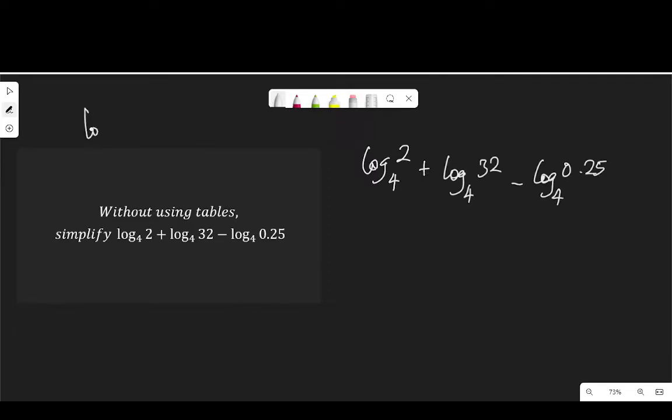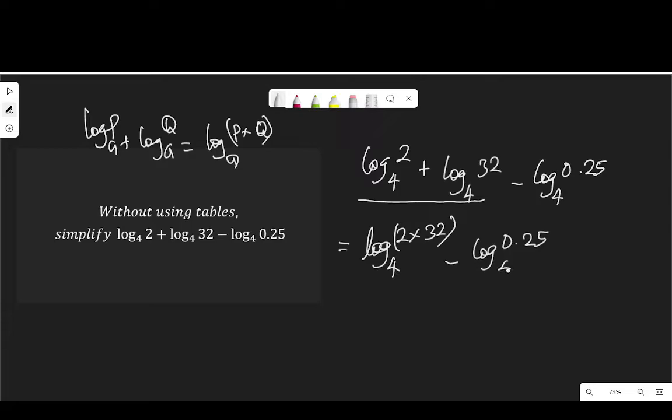Log p to base a plus log q to base a equals log(p times q) to base a. So I'm going to apply that to the first part of the question. That will give me log₄(2 × 32) minus log₄(0.25). And 2 times 32 is 64, so that will give me log₄(64) - log₄(0.25).